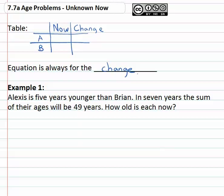So for this first example we're told that Alexis is five years younger than Brian. In seven years the sum of their ages will be forty-nine. How old is each now?